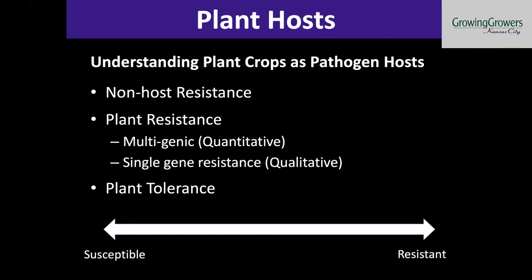Just because you have powdery mildew on tomatoes doesn't mean you're going to have powdery mildew on cucumbers, because they're two completely different pathogens that have a very distinct relationship with their hosts. In terms of resistance and tolerance, this is where we start to see a spectrum from susceptible to resistant. Resistance basically means that the plant has some type of mechanism that it utilizes in order to reduce the ability of that pathogen to cause disease. In quantitative resistance, it doesn't necessarily mean that it stops it completely, but that it reduces the spread of the disease through the plant or a population of plants.